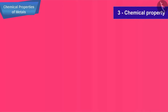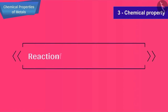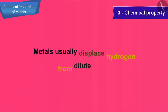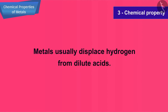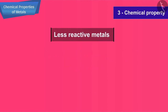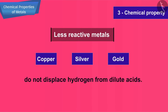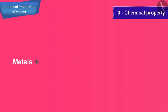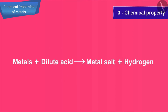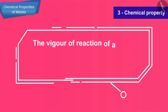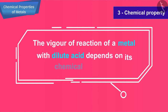The next property that we are about to study is the reaction of metals with dilute acids. Metals usually displace hydrogen from dilute acids. Only less reactive metals like copper, silver and gold do not displace hydrogen from dilute acids. When a metal reacts with a dilute acid, then a metal salt and hydrogen gas are formed. All metals do not react with dilute acids. The vigour of the reaction of a metal with dilute acid depends on its chemical reactivity.